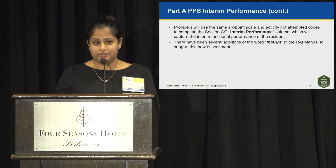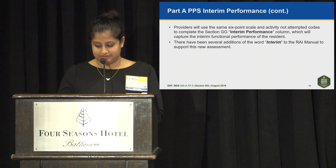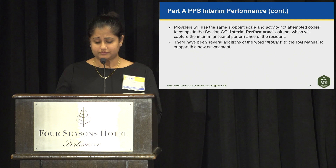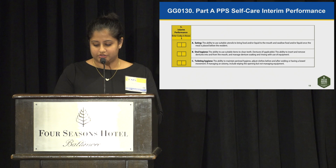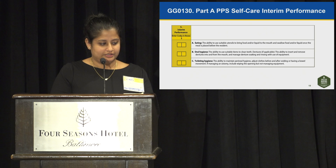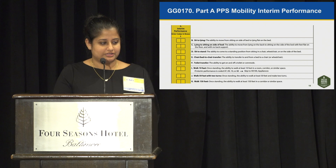Scoring the interim performance activities in the assessment, providers will use the same six-point scale and activity-not-attempted codes currently used for Section GG. It captures the interim functional performance of the residents. There have been several additions of the word 'interim' in the RAI manual to support this new assessment. These are the three GG0130 items on the interim performance — it looks very similar to how you would code admission and discharge performance for Section GG. Also shown here is the Part A PPS mobility interim performance, which covers the GG0170 items.